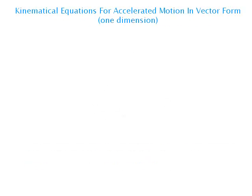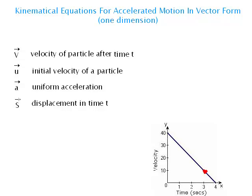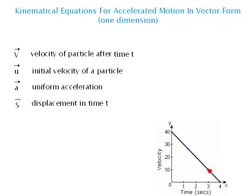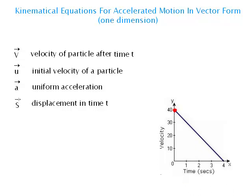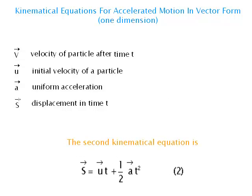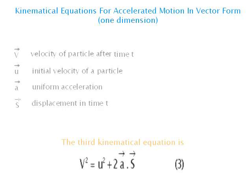Kinematical equations for accelerated motion in vector form (one dimension). Consider a particle moving along a straight line with initial velocity u and uniform acceleration a. Let v be the velocity after time t and s be the displacement in time t. The three kinematical equations are: (1) v = u + at; (2) s = ut + ½at²; (3) v² = u² + 2a·s.